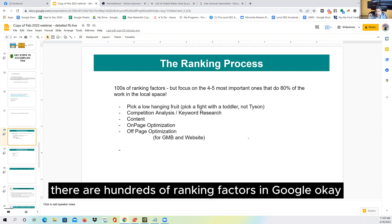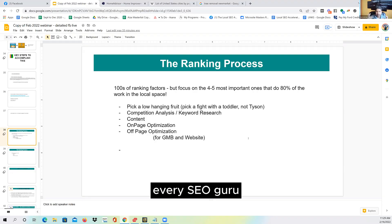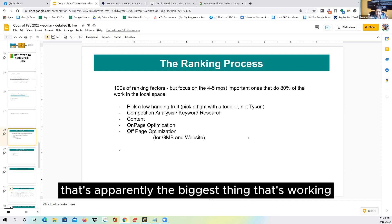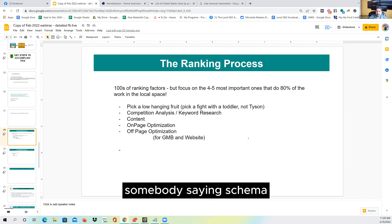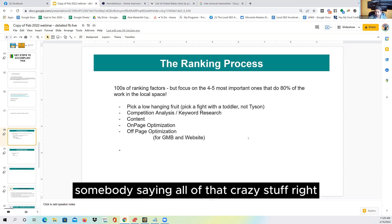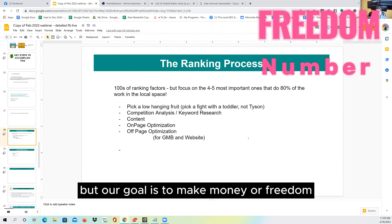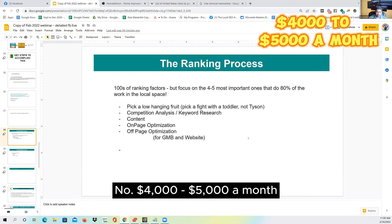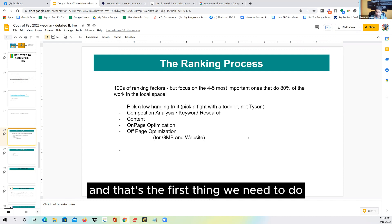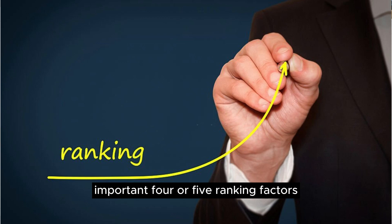There are hundreds of ranking factors in Google. Every SEO guru out there — the guru's grandma — they're all teaching something that's apparently the biggest thing working: somebody's saying schema, somebody's saying embed, somebody's saying the GMB CID URL. Here's what I want to understand: yes, there are probably a hundred ranking factors, but our goal is to make money — a freedom number of four to five thousand dollars a month. To make that money, we don't need to learn all of that. We need to find the most important four or five ranking factors.